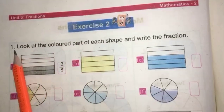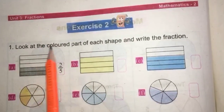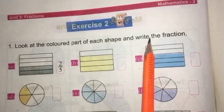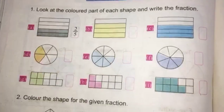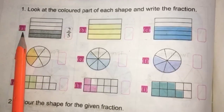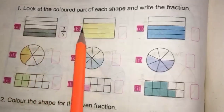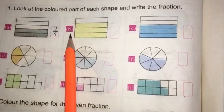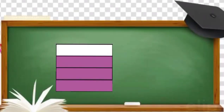Question number one of this exercise is: look at the colored part of each shape and write the fraction. Part A has already been done for you. Now I am going to do part B.